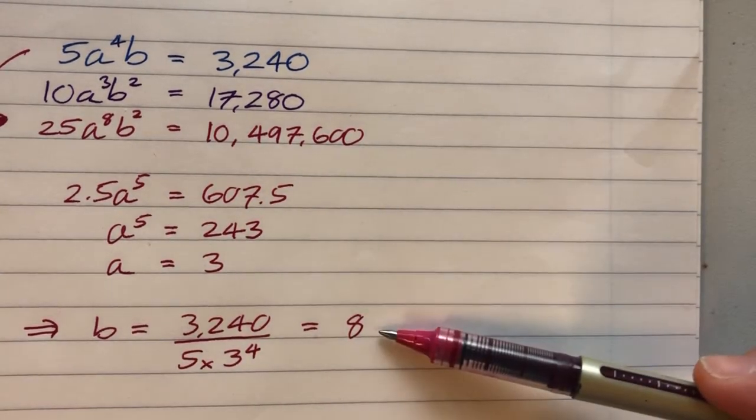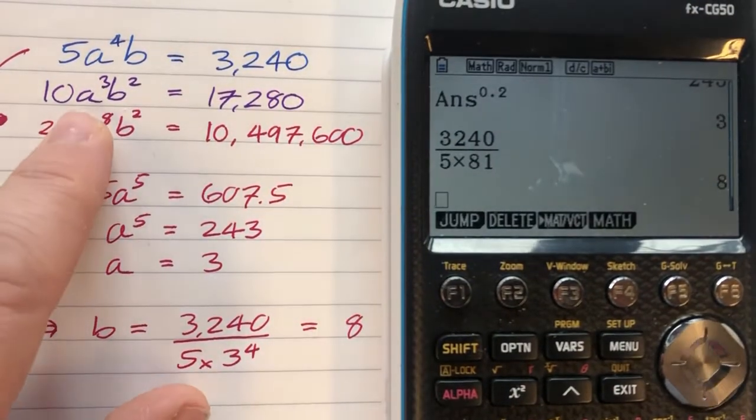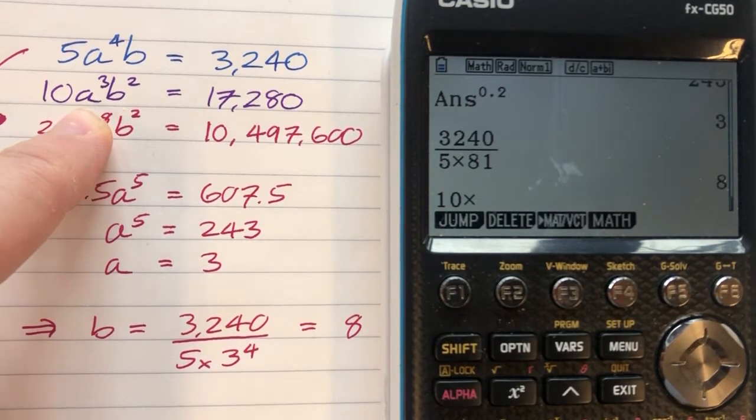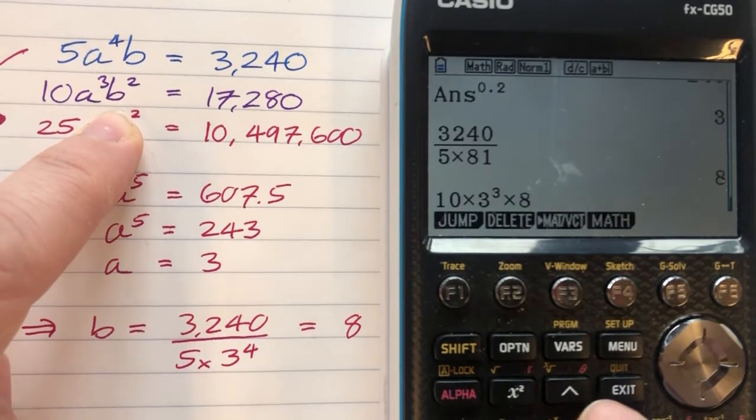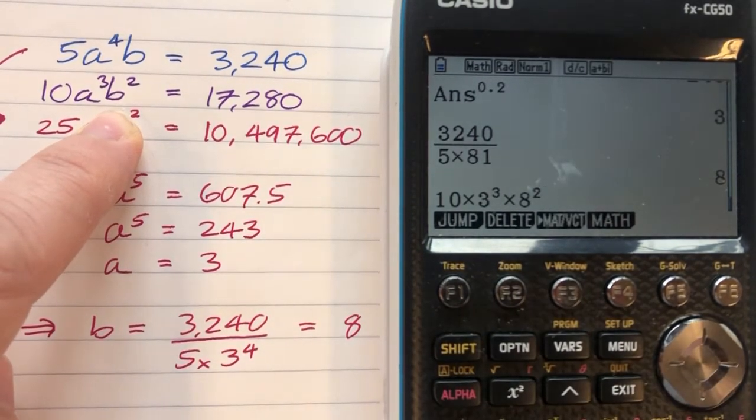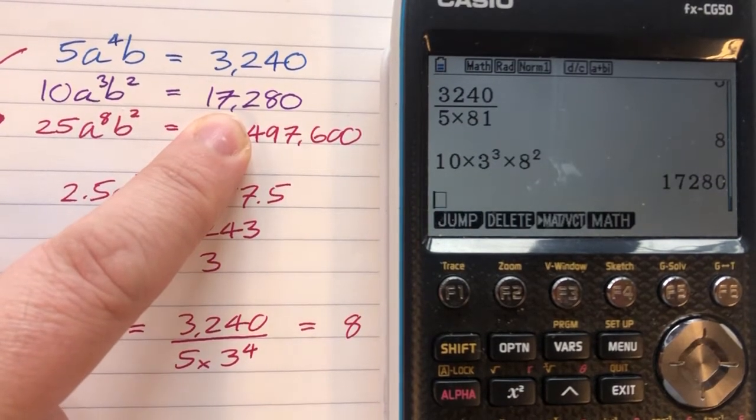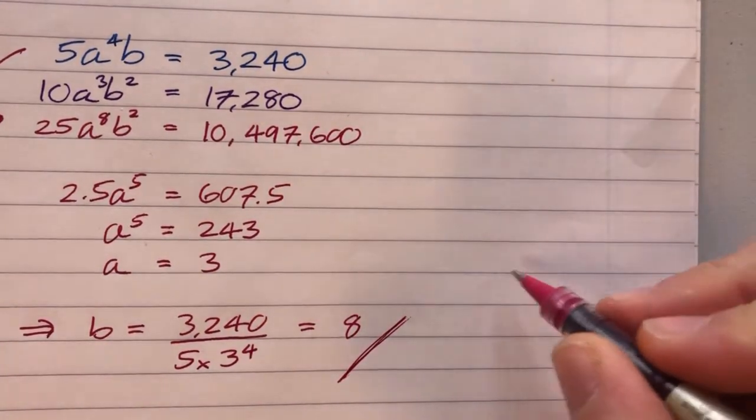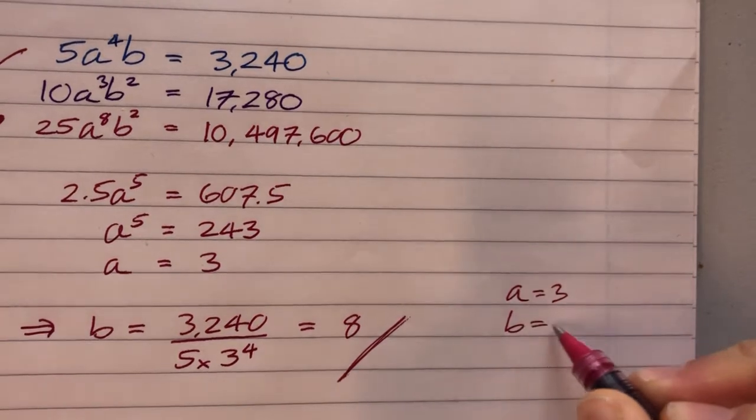And what I would just do is just check to make sure that works with the bottom one. So in my calculator, just in case I made an error, I'm going to type in 10 multiplied by a cubed. Well, a is 3, so that's 3 cubed, times b squared. I've got b squared. b is 8. So that should equal 17,280, which it does. So that confirms to me that I've not made any errors in my calculation. So in conclusion, a is 3 and b is 8.